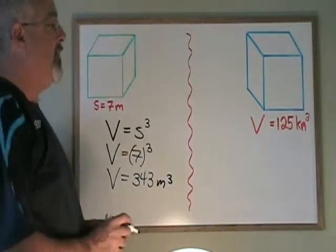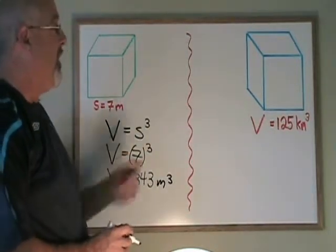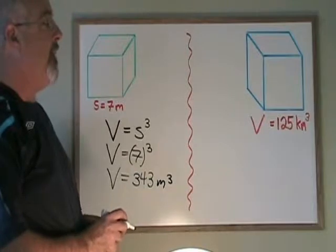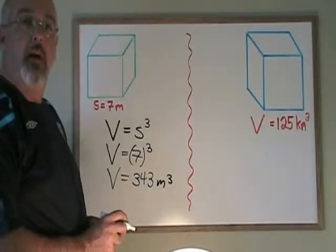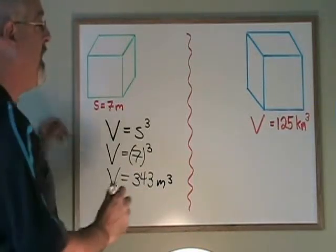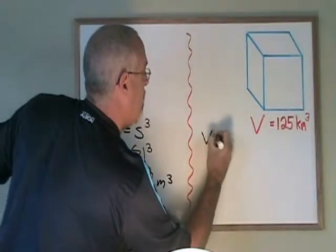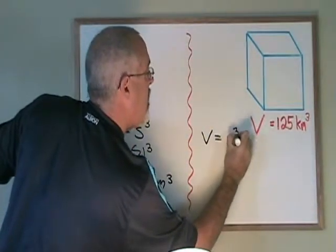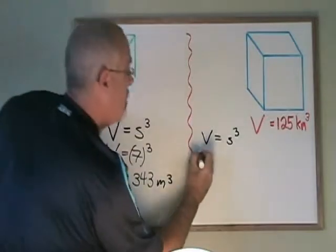In the second example, we already know the volume. The volume of this cube is 125 kilometers cubed. We want to know the side length. We take our volume formula and we plug 125 into the V position.